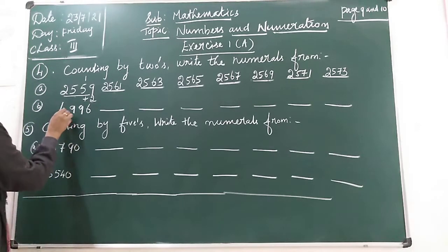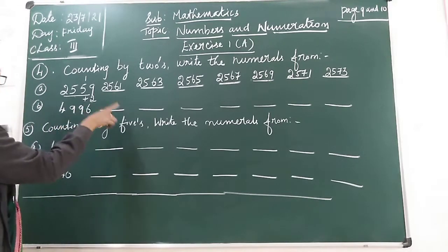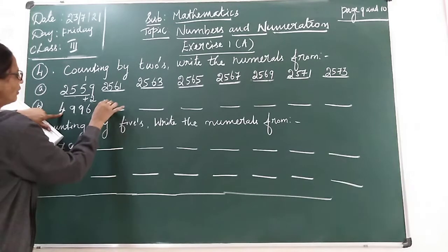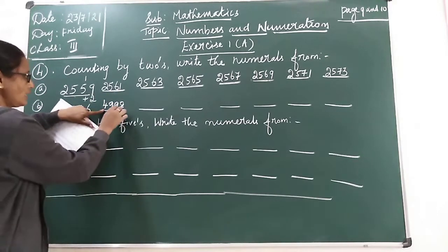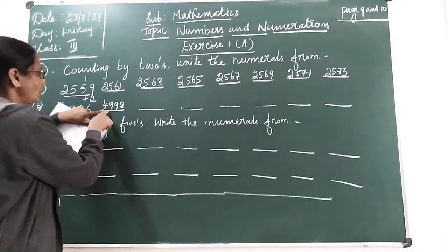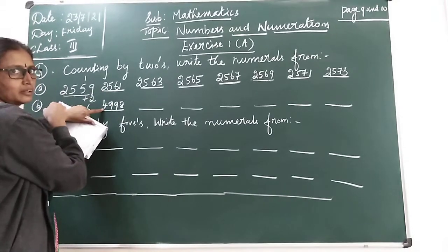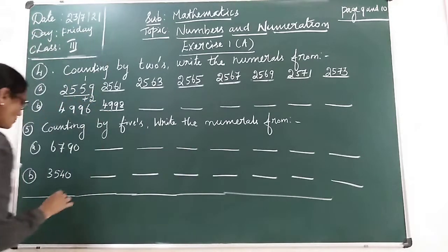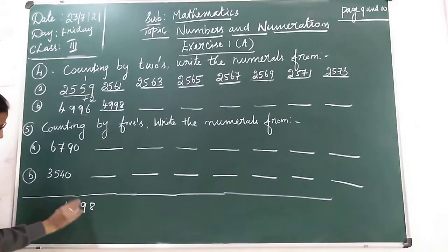Now next number 4996. So 96 after 90 two numbers have to count. 96 after 97, 98. So 4998. So 4998 after 100. So what you have to do here? In hundred space you have to add 1 children. So if you add 1 here.